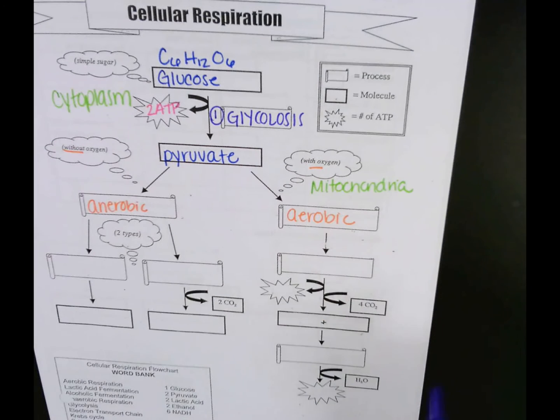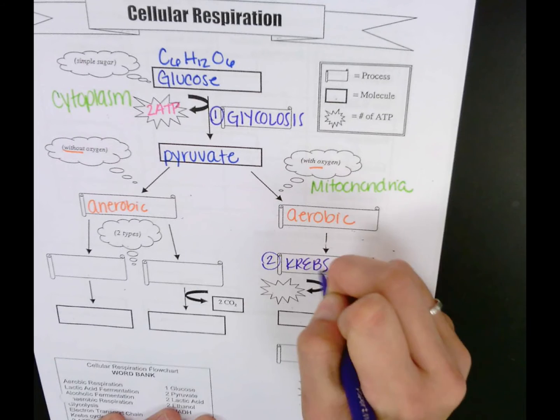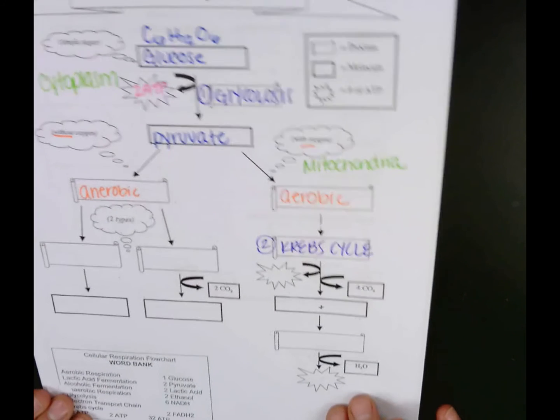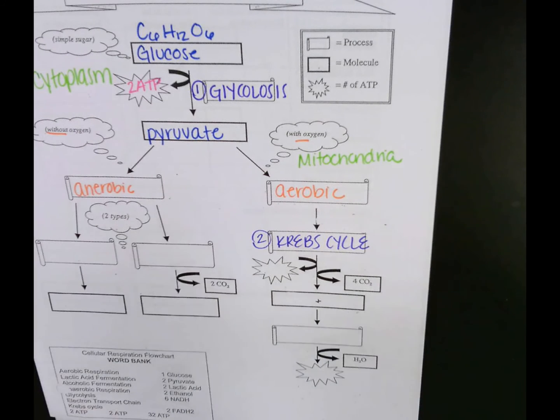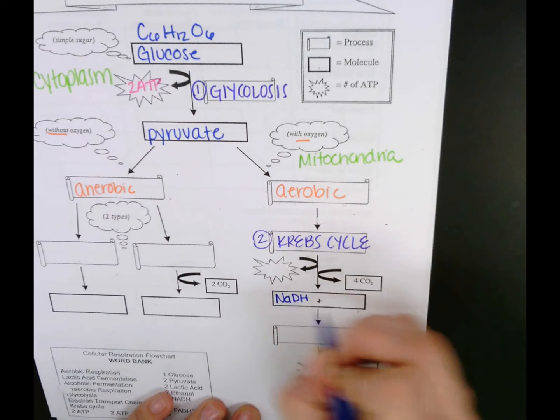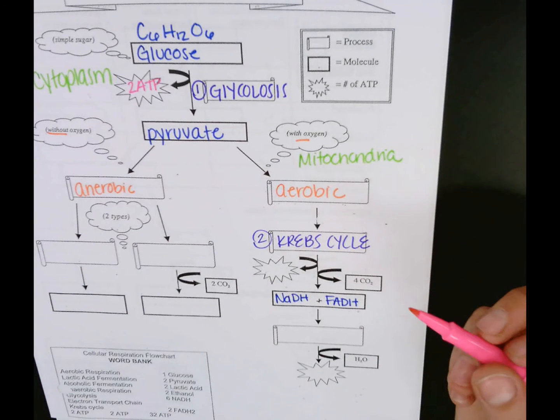So the second step of cellular respiration is called the Krebs cycle, and this occurs in the matrix of the mitochondria, that empty space within the mitochondria. The Krebs cycle produces carbon dioxide, it produces two electron carriers, and it does produce ATP. Again though, the Krebs cycle requires oxygen. So the Krebs cycle releases four CO2. It also produces NADH and FADH. Do you guys remember how many ATP are produced by the Krebs cycle? Two.